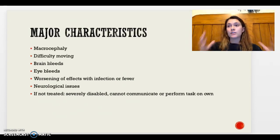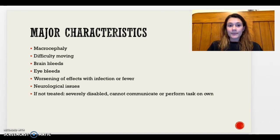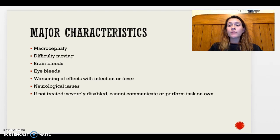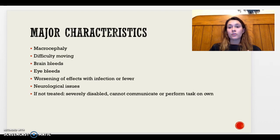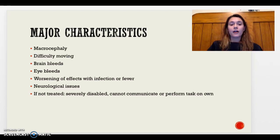The major characteristics of this disorder include macrocephaly, which is an enlarged head that can be noticed at birth. Difficulty moving, brain bleeds, and eye bleeds can also occur. Worsening of these effects typically occurs due to an acute event such as infection, fever, or seizure, so preventing these is key to avoiding worsening of symptoms.